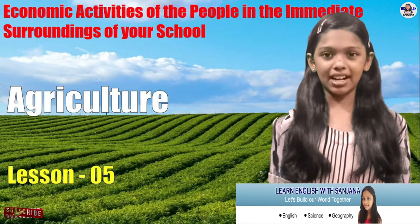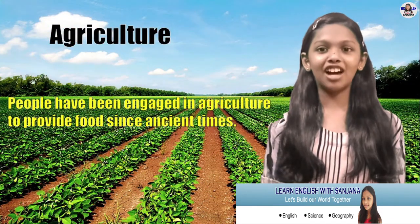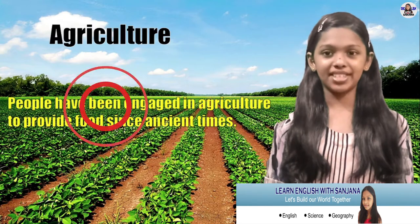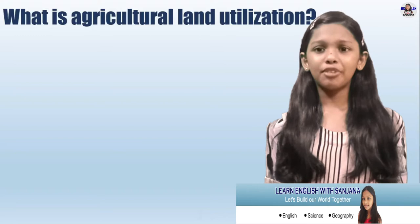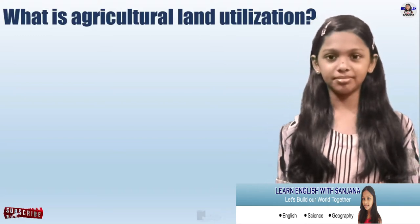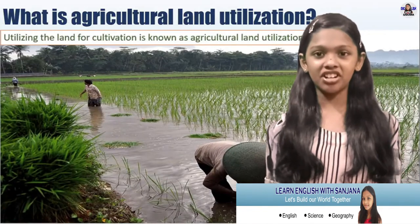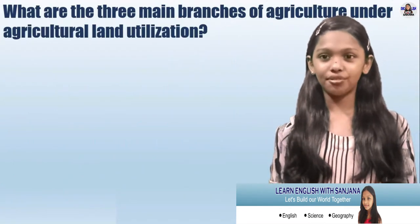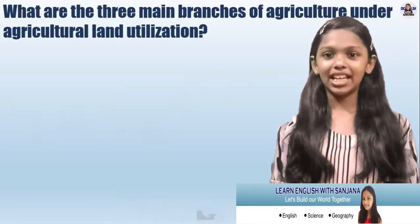Economic activities of the people in the immediate surroundings of your school — agriculture — Unit 2, Lesson 5. We all know that people have been engaged in agriculture to provide food since ancient times. Now, what is agricultural land utilization? Utilizing the land for cultivation is known as agricultural land utilization.